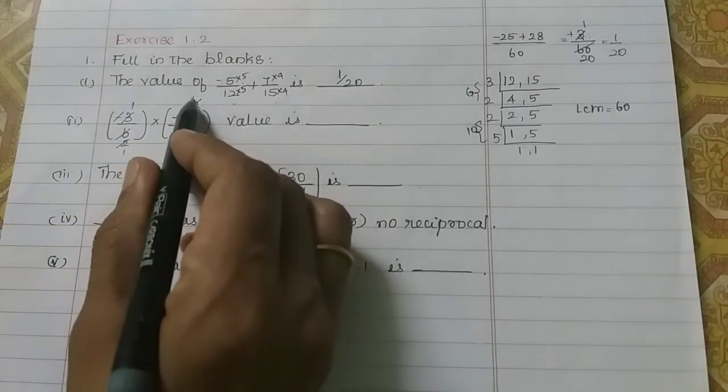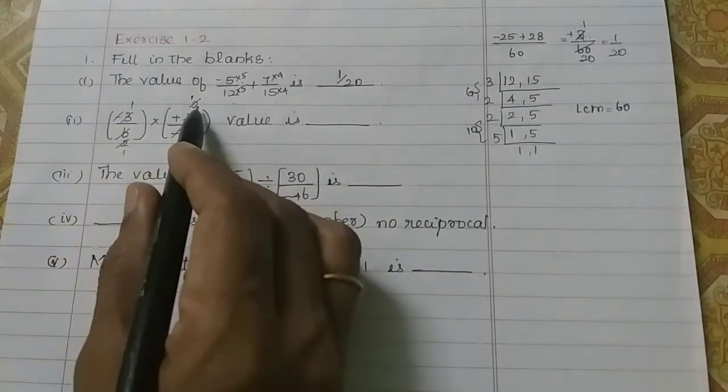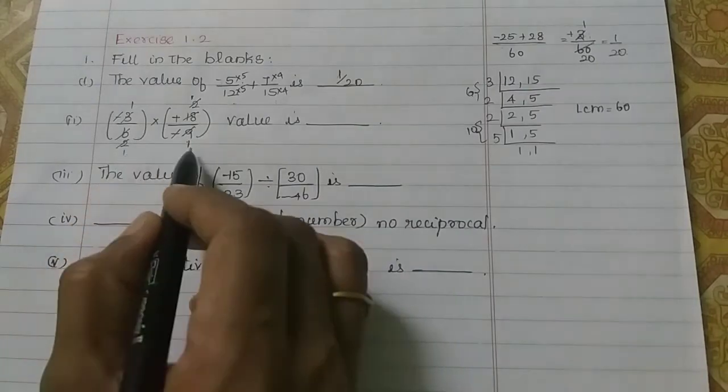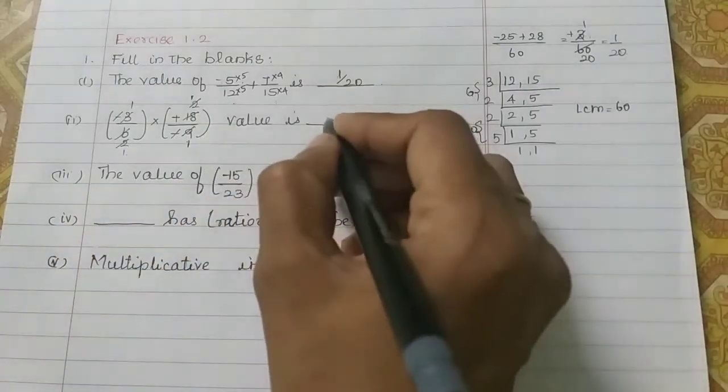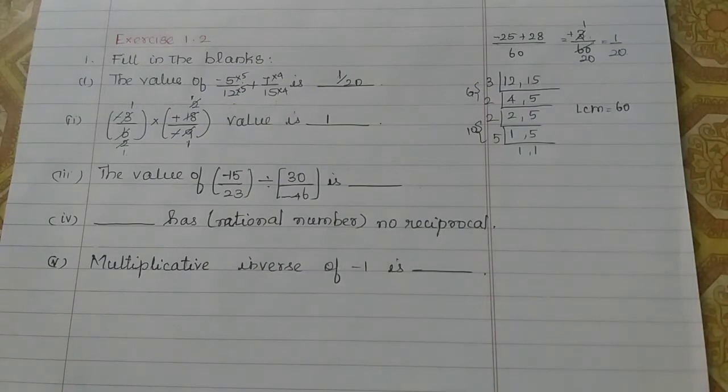So, how do we call it? 1 and 1 is 1. So, 1 into 1 is 1. By, denominator, 1 into 1 is 1. So, 1 divided by 1 is 1. So, the value is 1.